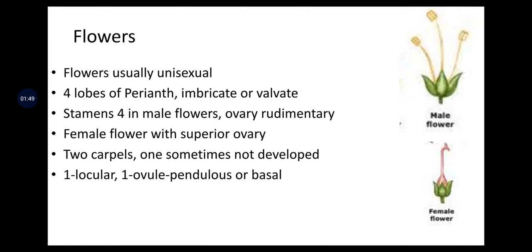Flowers are usually unisexual, meaning male and female flowers are present on the same plant. Four lobes of perianth, imbricate or valvate. Stamens are four in male flowers with a rudimentary ovary. Female flowers have a superior ovary with two carpels, one sometimes not developed, one locular, one ovule, pendulous or basal.